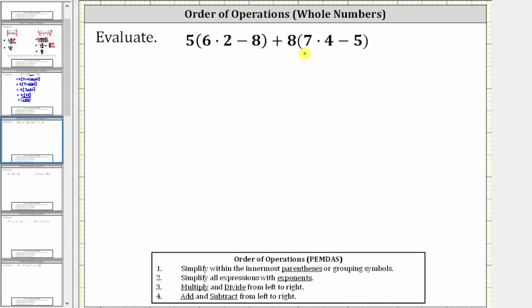We want to evaluate the given expression. Following the order of operations, the first step is to simplify within the parentheses. Notice in our expression we have two sets of parentheses. Also notice how within the parentheses we have multiplication as well as subtraction.